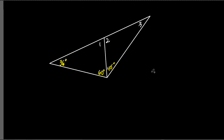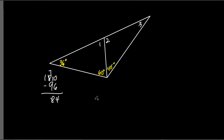To find angle one: 36 plus 60 equals 96. Now subtract from 180: 180 minus 96 equals 84 degrees. So angle one is 84 degrees. Now let's find angle two. Do you see how angle one and angle two form a straight line? If angle one is 84, then angle two equals 180 minus 84, which is 96 degrees.